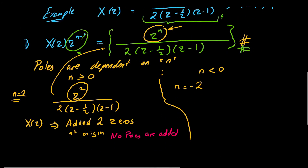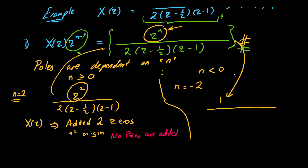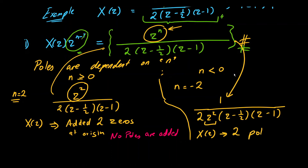For the case n < 0, taking n = −2, the function becomes 1 / [2z²(z − 1/2)(z − 1)]. Now compared to X(z), we have added two poles at the origin. These are repeated poles, and we need to evaluate them as well.